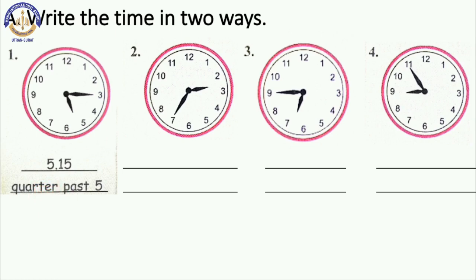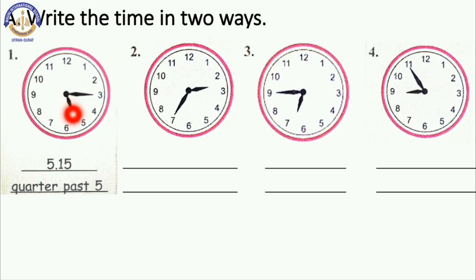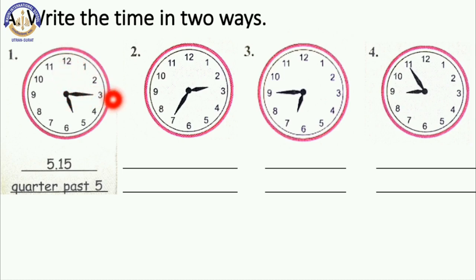Here the minute hand is on 3, that means 15 minutes. And the hour hand is on 5. So the time is 5:15. And here this is the quarter, so in words it is quarter past 5. Write here: quarter past 5.